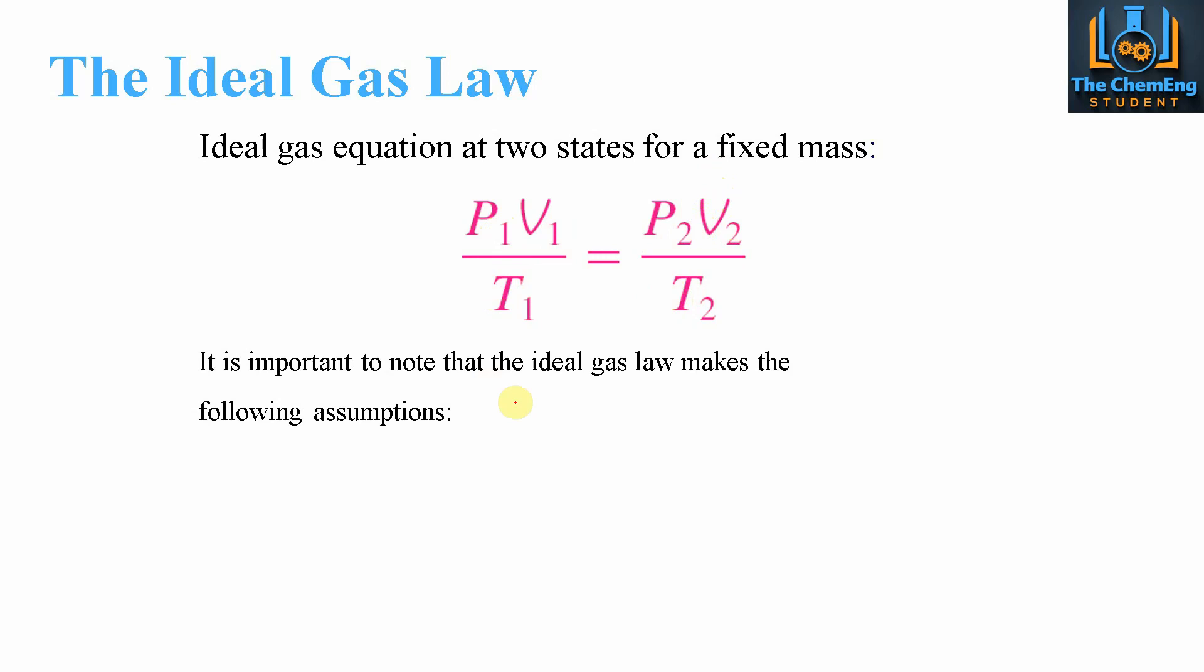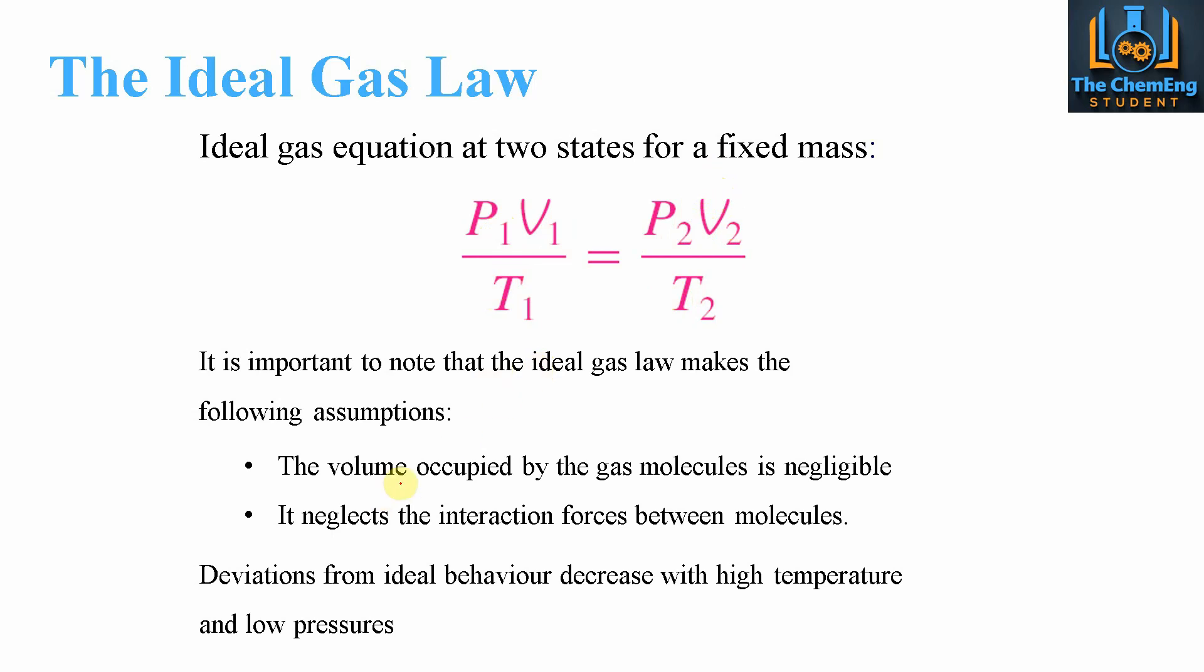Now when we have these types of systems, it is important to note that the ideal gas law makes the following set of assumptions: that the volume occupied by the gas molecules is negligible compared to the overall system, and it neglects the interaction forces between the molecules themselves. If we have any deviations from this behavior, with higher temperatures and lower pressures, we cannot assume ideal gas conditions. We would therefore have another type of equations that we would have to solve. We look at how to solve non-ideal gas systems in our thermodynamics course. If you want to know more about that, I'll put a link in the description.